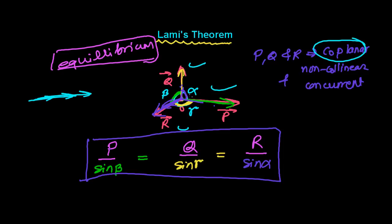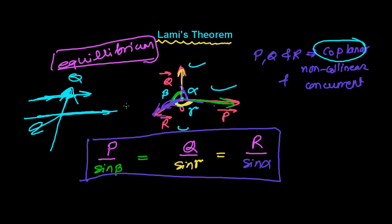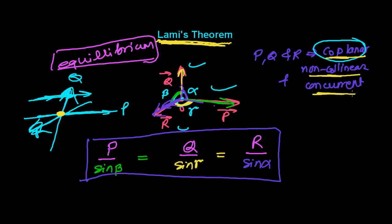Concurrent means they meet each other at a point. P, Q, and R all meet at a single point. So concurrent means they meet at a certain point, non-collinear means they are not in a single line, and coplanar means they are all in a single plane. This is a very important condition for applying Lami's theorem.